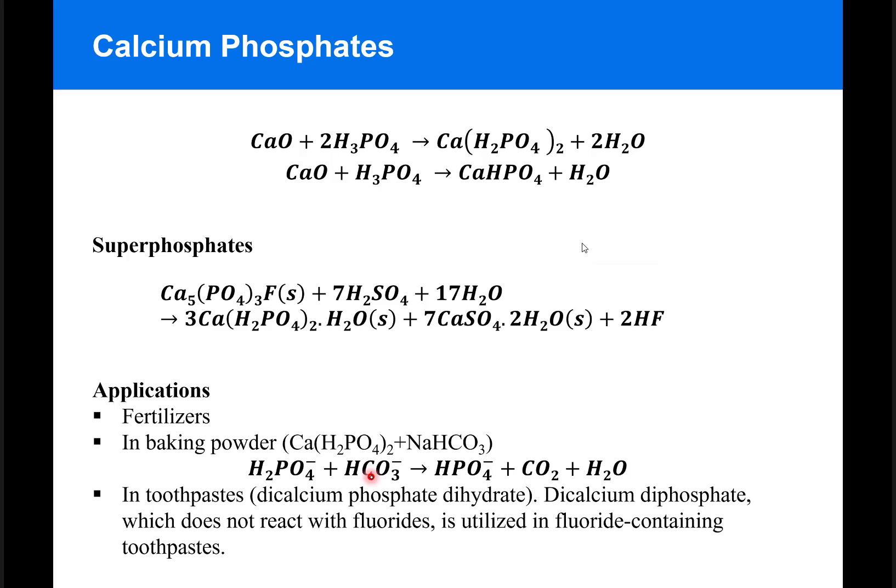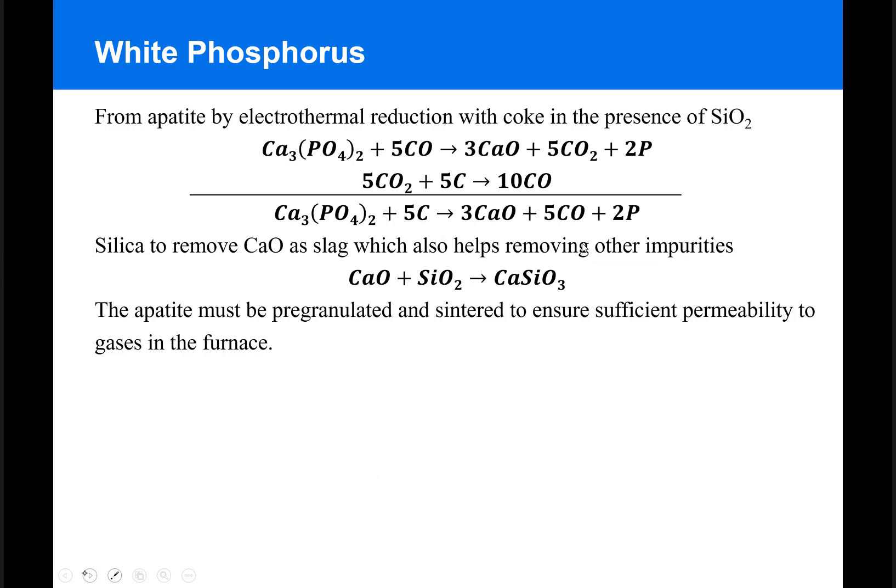An acid-base reaction will take place, producing carbon dioxide in water. It's also used in toothpaste. Elemental phosphorus can be produced from apatite ore by electrothermic reduction with coke in the presence of silica.